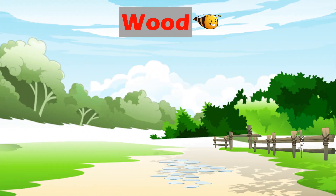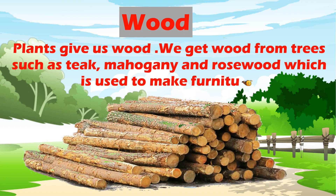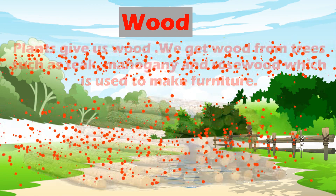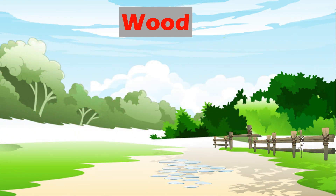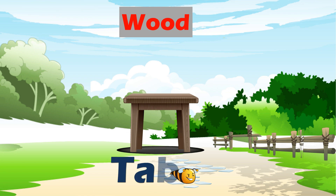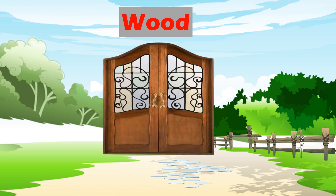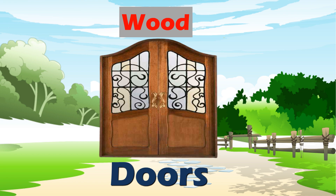Wood. Plants give us wood. We get wood from trees such as Teak, Mahogany, and Rosewood, which is used to make furniture like Chair, Table, and Doors.